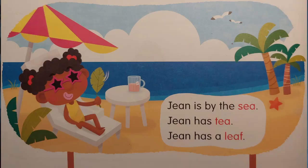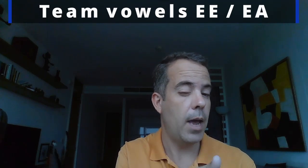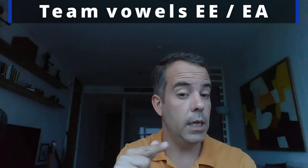Here you have a girl and she is by the sea. She has some tea — a cup of tea or a mug on a table — and she has a leaf. You can see the sea, the sand, some palm trees, and some birds flying in the sky. Now let's read the sentences. I go first, then you repeat. I want you to read twice to practice.